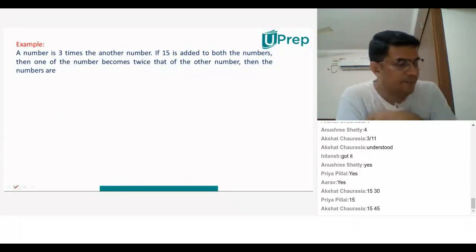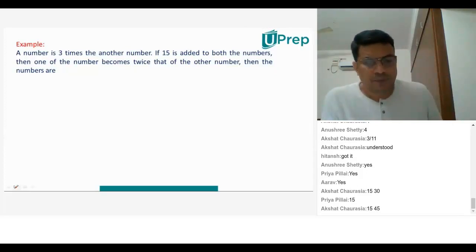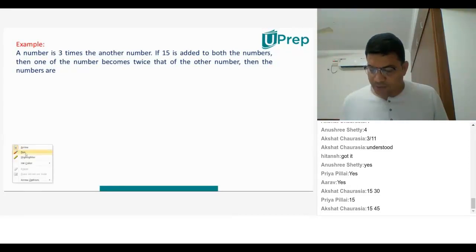And 45. Brilliant! Good, you're solving it quickly now. I like it. A number is three times another number, so that means if I take a number as X...